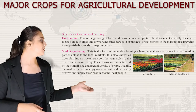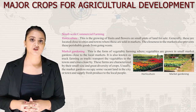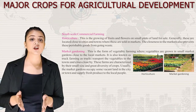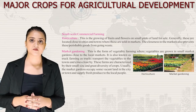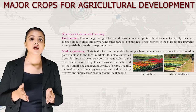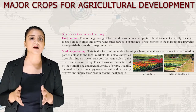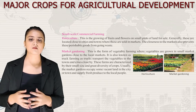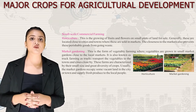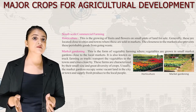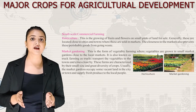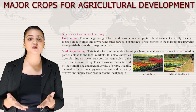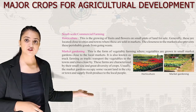Now let's talk about small scale commercial farming. First we have horticulture — the growing of fruits and flowers on small plots of land for sale, generally located close to cities and towns. The closeness to markets also prevents these perishable goods from going to waste. Next we have market gardening — vegetables grown in small market gardens close to local markets, also known as truck farming as trucks transport the vegetables to towns and cities. These farms are characterized by small size and great diversity of crops.